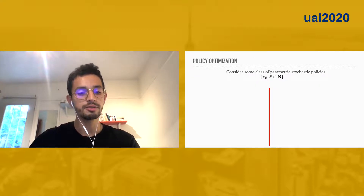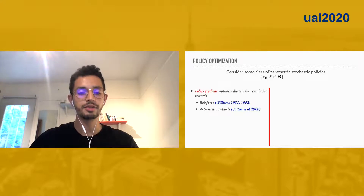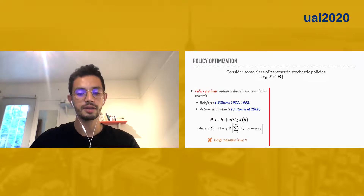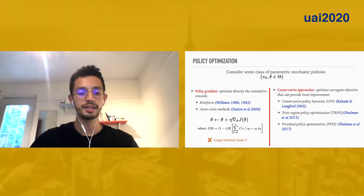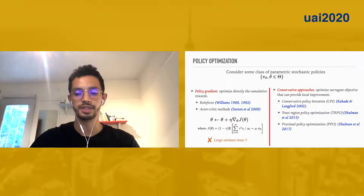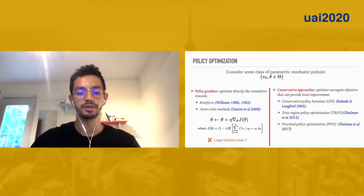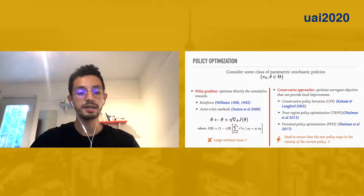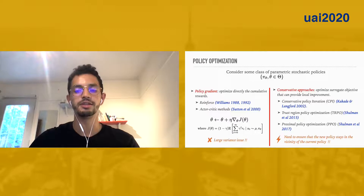The most widely used methods for policy optimization can be categorized into two families. The first is policy gradient methods, which optimize directly the cumulative rewards, and it is known that this method can suffer from large variance issues. The second family is conservative approaches that optimize surrogate objectives that can provide local improvement, and in this family we can find CPI, TRPO, and PPO algorithms. The main ingredient of these approaches is how to ensure that the new policy stays in the vicinity of the current policy.